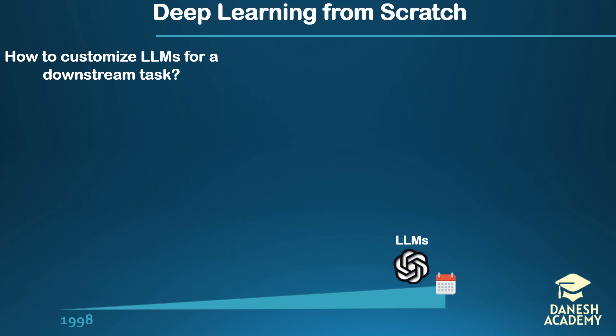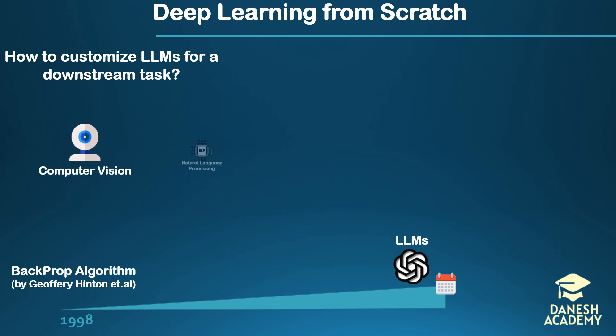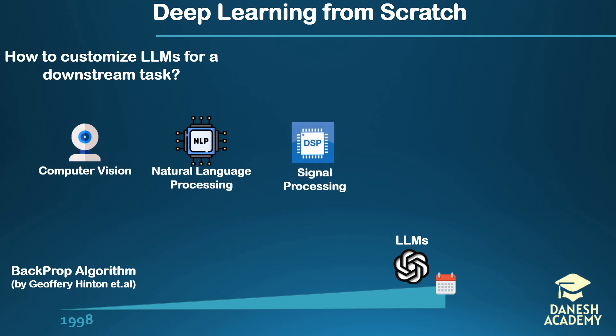Back in the early days of AI, when the backpropagation algorithm was the hottest thing since sliced bread, researchers from different fields — think computer vision, natural language processing, and signal processing — wanted to test these shiny new AI tools on their old-school problems. So, in the beginning, there were tasks.